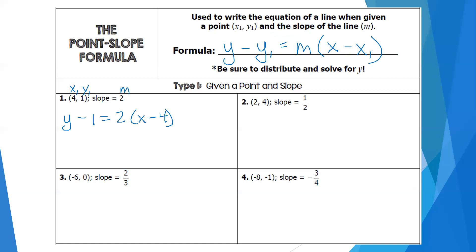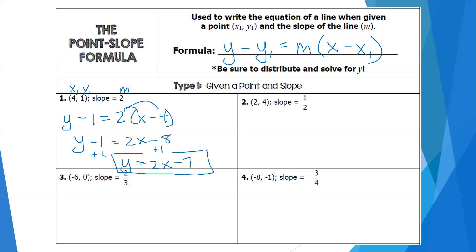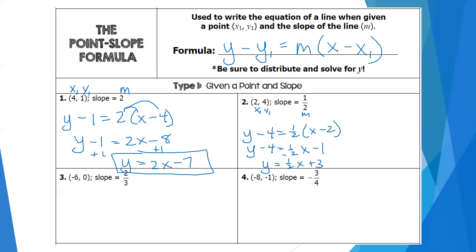To get slope-intercept form, I distribute the 2: y minus 1 equals 2x minus 8. Then I add 1 to both sides, giving y equals 2x minus 7. For number 2, the point is given with a slope of one-half. Plugging into point-slope form and distributing one-half: one-half times x is one-half x, and one-half times negative 2 is negative 1. Adding 4 to both sides gives y equals one-half x plus 3.